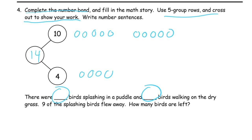There were 10 birds splashing in a puddle and 4 birds. Let's try the 10 and the 4. 10 birds splashing in a puddle and 4 birds walking on the dry grass. 9 of the splashing birds flew away, so the 9 has to get crossed out from the 10. So the 10 has to be the ones that were splashing. These are the splashing birds, and the other 4 are the ones that were walking. These are the walking birds. So there were 10 splashing in a puddle and 4 walking on the dry grass. Then these 9 splashing birds flew away, and the ones that are left, there are 5.